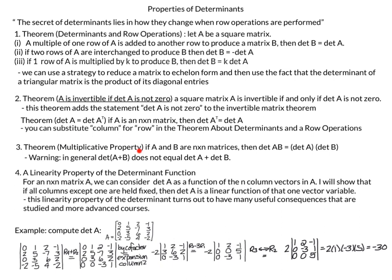We'll also talk about the multiplicative property. If A and B are n-by-n matrices, then the determinant of A times B equals the determinant of A times the determinant of B. There is a warning: in general, the determinant of A plus B does not equal determinant of A plus determinant of B. There is a linearity property of the determinant function as a special case, which is very useful but generally studied in more advanced courses.